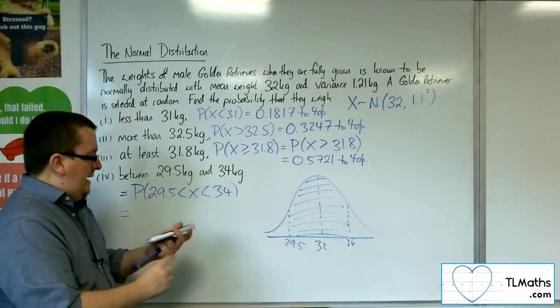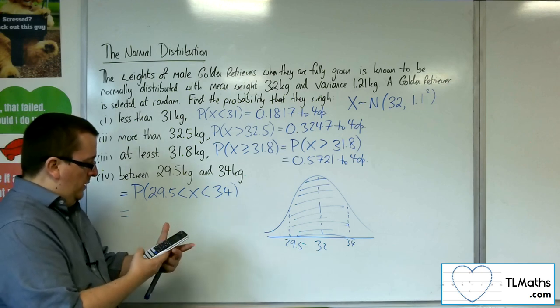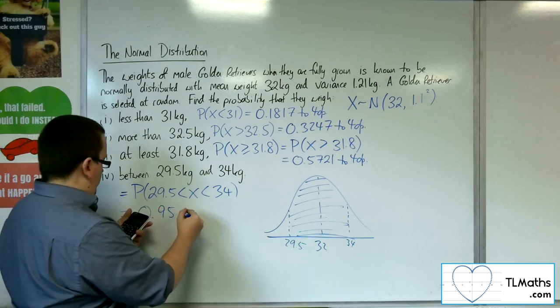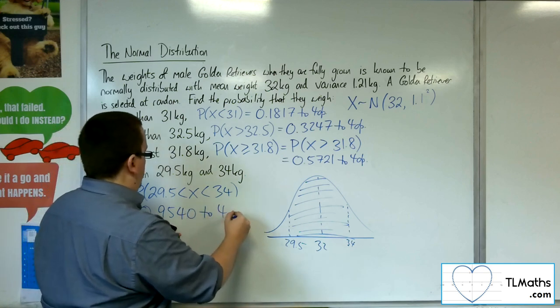On the normal CD, I can put the lower in as 29.5, the upper in as 34. Everything else is the same. And I get 0.9540 to four decimal places.